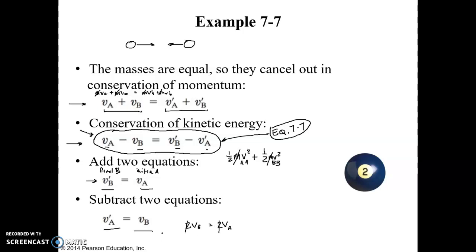And then we can just cancel out the 2s. And, oh, that was final by the way, so we're saying the final vA is equal to the initial vB.